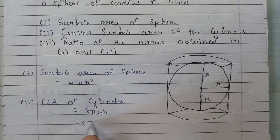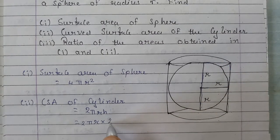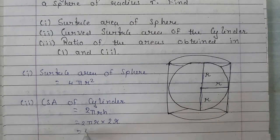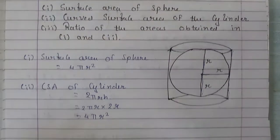So 2 pi r will remain as it is, and height will be 2 into 2, that is 2 times radius. Done. Now 2 into 2, that is 4 pi r into r is r square. So surface area of cylinder is also equal to 4 pi r square.